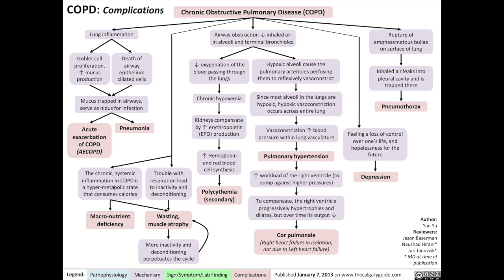Additionally, since the chronic systemic inflammation in COPD is effectively a hypermetabolic state that consumes many calories, this results in patients oftentimes having a macronutrient deficiency. Furthermore, trouble with respiration leads to increasing inactivity and deconditioning. Both the hypermetabolic state and the deconditioning will result in wasting and muscle atrophy, which results in more inactivity and deconditioning — further perpetuating the cycle of wasting and muscle atrophy.